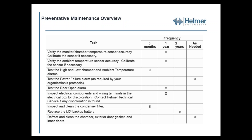For preventive maintenance — this is from the Helmer manual and is representative of all manufacturers. Inspect all electrical components and wiring terminals in the electrical box for any discoloration, which is a clear indication something's not correct, potentially from loose connections or failing start components. Inspect and clean the condenser and condenser filter. Defrost and clean the chamber and the exterior and interior door gaskets. We've covered a lot of material today, and I want to thank Brian and Ben for helping put this together.